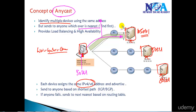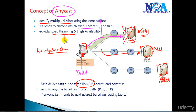If the nearest possible device is not reachable or goes down, the traffic will be forwarded to the next nearest possible server, but it will ultimately be sent to only one device in that set. The major advantage of anycast is that it provides load balancing and high availability.